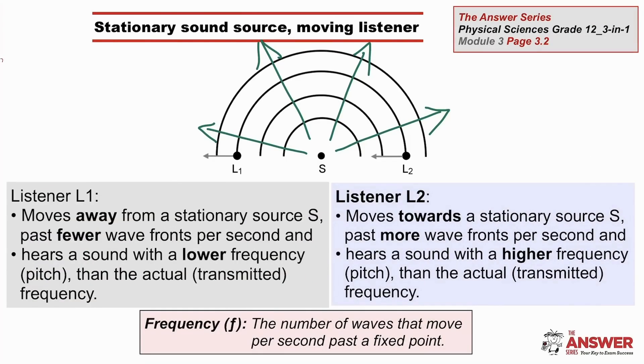If the source is stationary, then we have to imagine the waves moving out from the center as these green arrows show. Listener number 1 is moving in the same direction as the wave fronts. So it takes longer to get from one compression to the next. So the frequency is lower, meaning fewer wave fronts per second. If the listener is moving towards the source of the sound, then the frequency is higher because that listener is encountering more wave fronts per second as he moves towards the source and the wave fronts move towards him in the direction of the green arrow.